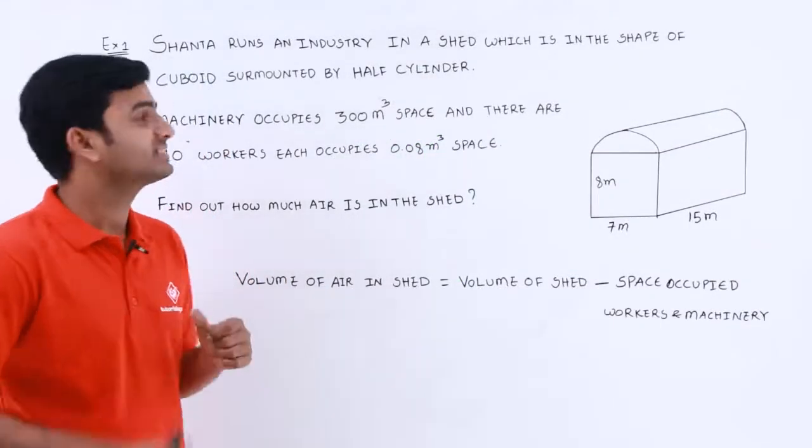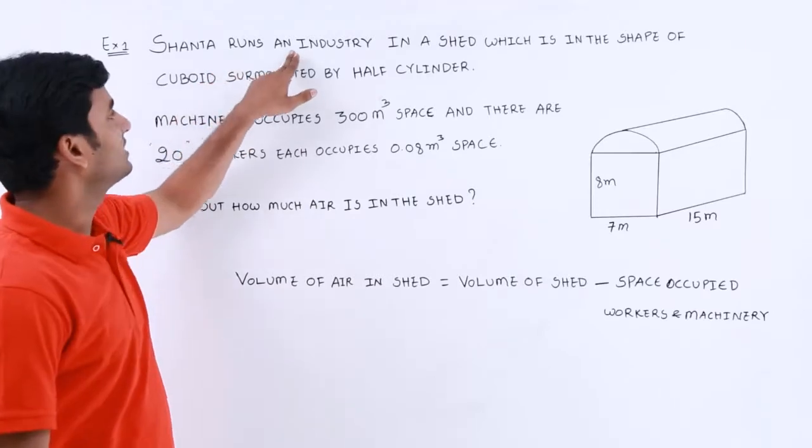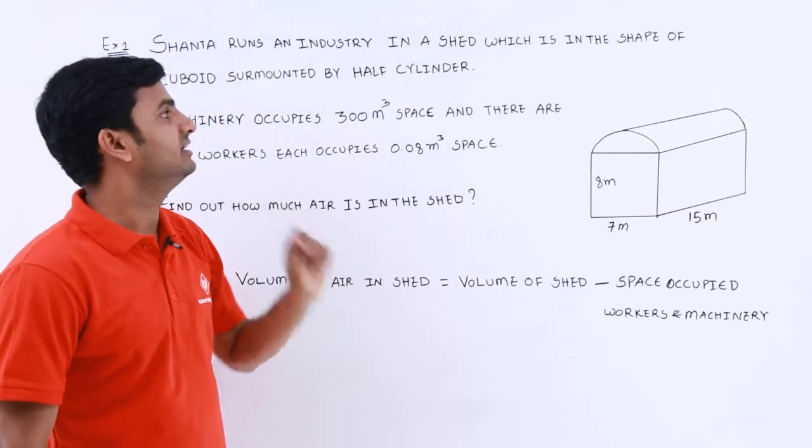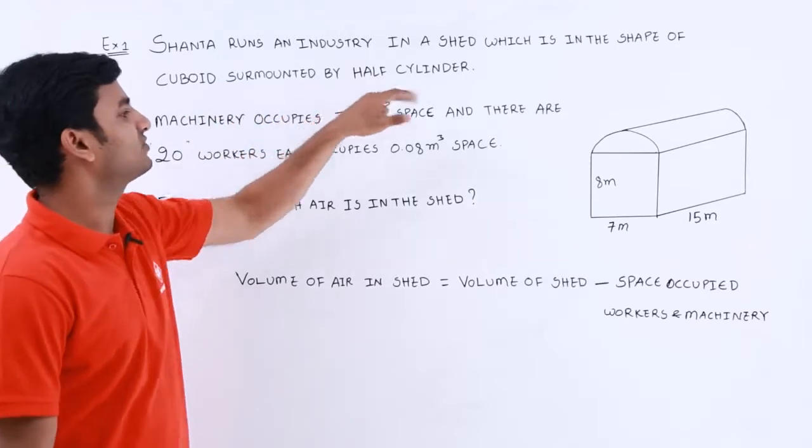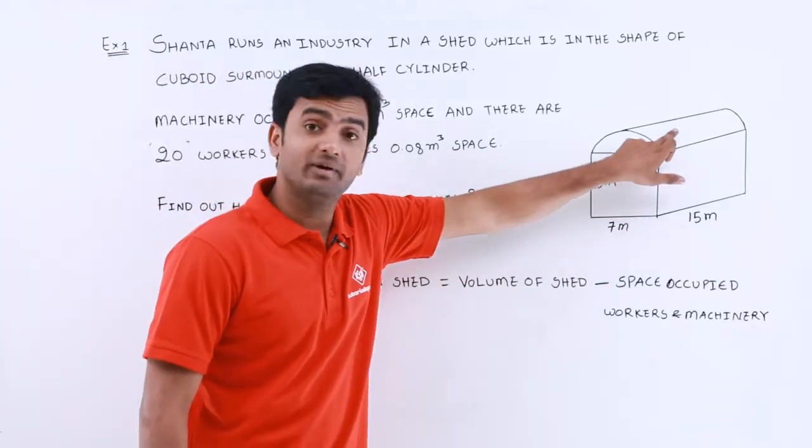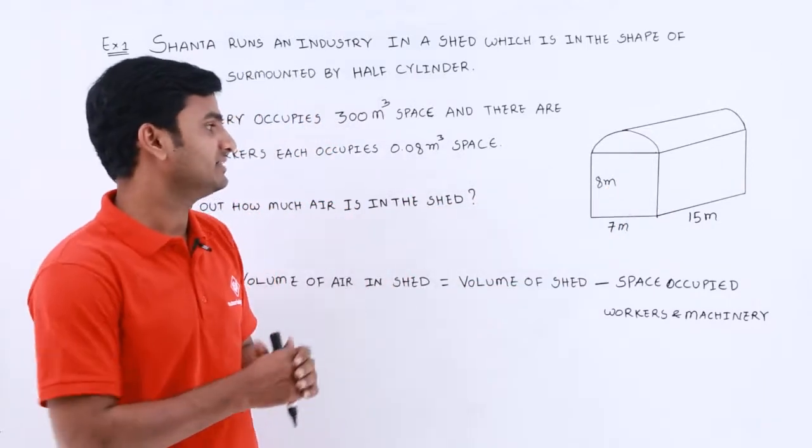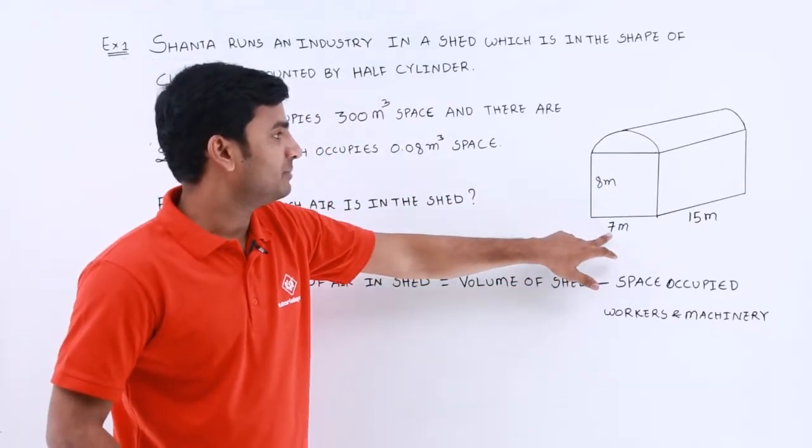In this example, it is given that Shanta runs an industry in a shed which is in the shape of a cuboid surmounted by a half-cylinder. Here cuboid surmounted by a half-cylinder and then measurements are the base measurement of cuboid.